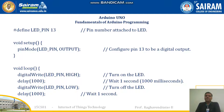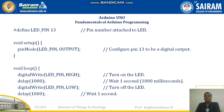Inside the `loop()` function, `digitalWrite(LED_PIN, HIGH)` turns the LED on. Then `delay(1000)` is called to wait for one thousand milliseconds, which is one second. After that, `digitalWrite(LED_PIN, LOW)` turns the LED off, making it blink.